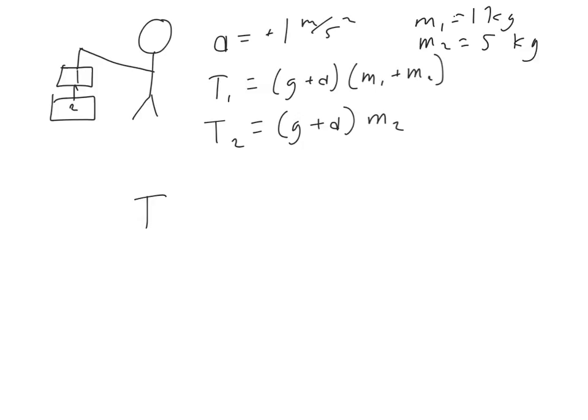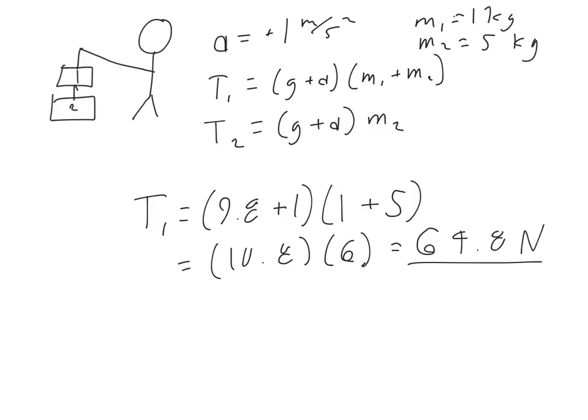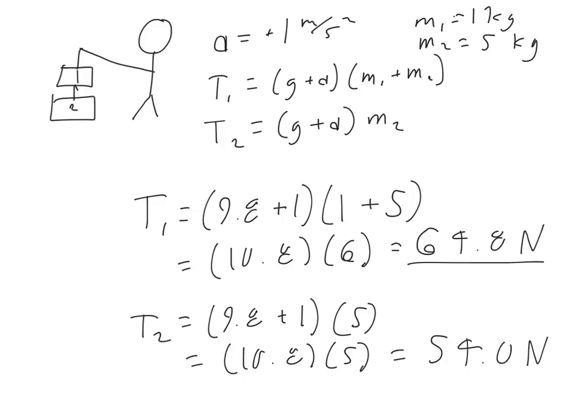And so if we do that, we're going to find then that tension 1 is going to be 9.8 plus 1 times 1 plus 5. So this is 10.8 times 6, which equals 64.8 newtons. And tension 2, just plugging in our numbers again, 9.8 plus 1 times 5. We have 10.8 times 5. That equals 54.0 newtons.